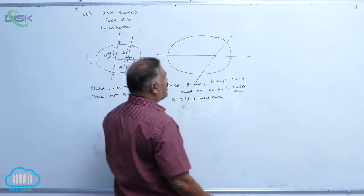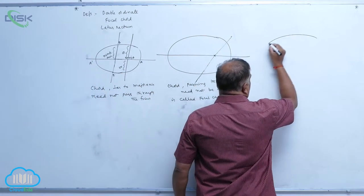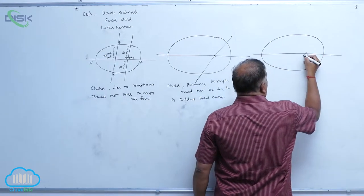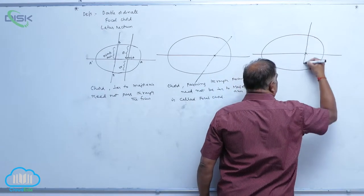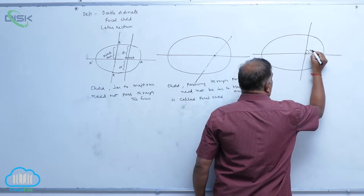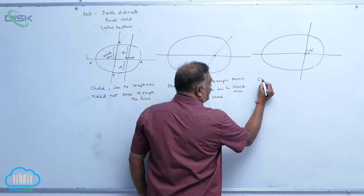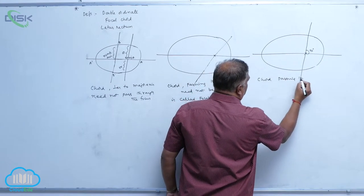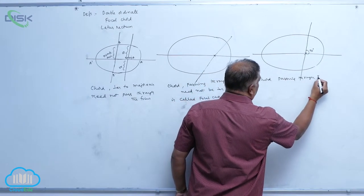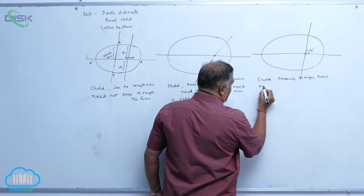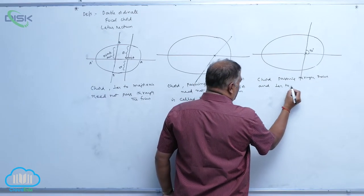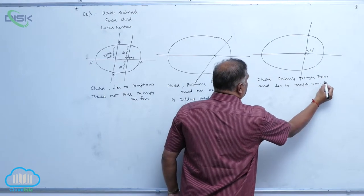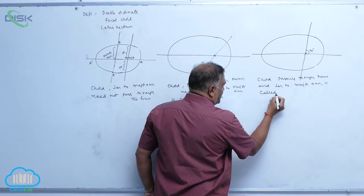One more definition is latus rectum. A chord passing through the focus and perpendicular to the major axis is called the latus rectum.